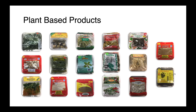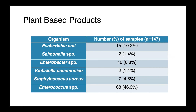Examples of the products found included jute leaves, vegetable mixes, and spices. Overall, we found E. coli from approximately 10% of the samples. Salmonella was also identified, as well as Enterobacter species, Klebsiella, Staph aureus including MRSA, and many of the samples contained Enterococcus, although fortunately none were vancomycin resistant.